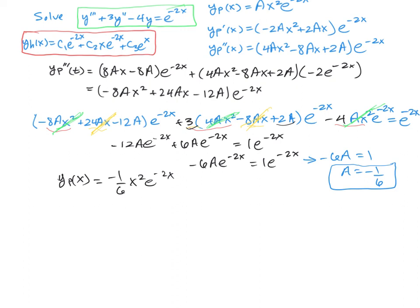The general solution combines the three terms of the homogeneous solution. So y(x) is c₁e^(-2x) plus c₂xe^(-2x) plus c₃e^x.